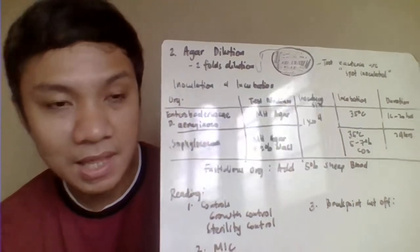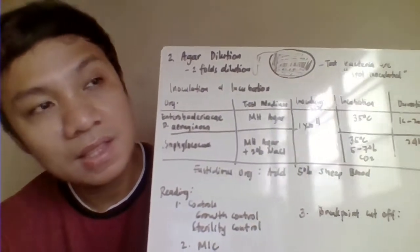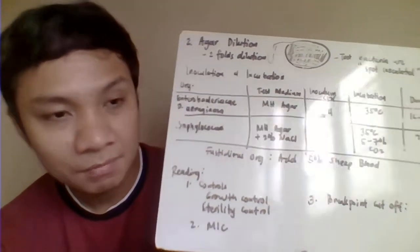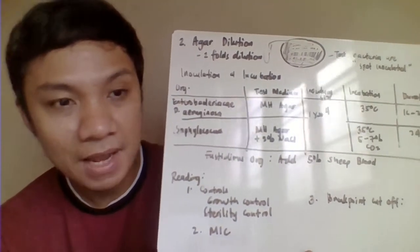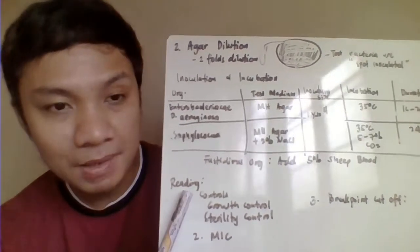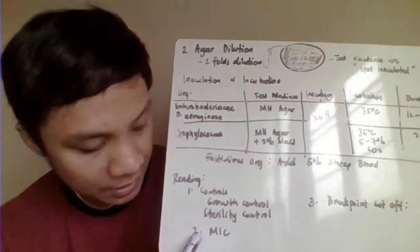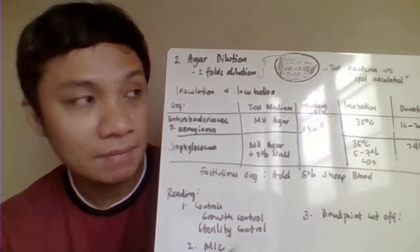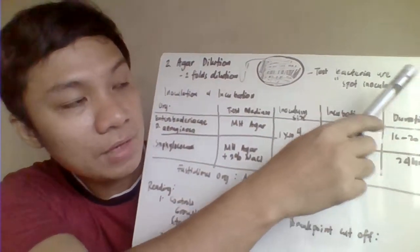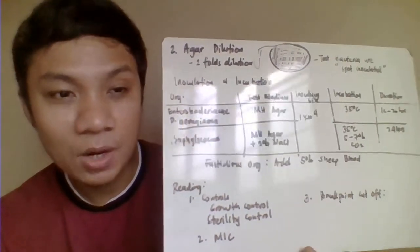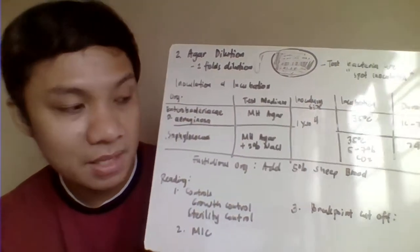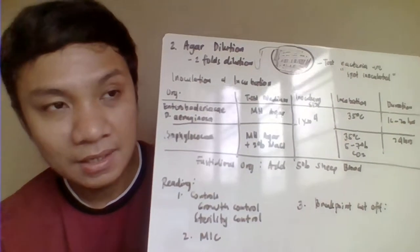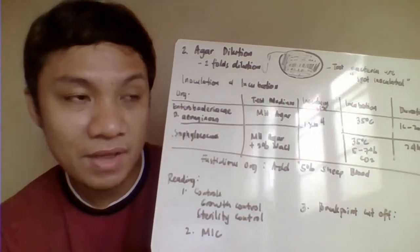Incubate fastidious organisms at 35 degrees Celsius with 5 to 7% carbon dioxide, the same as for Staphylococcus. For interpretation, you still need a growth control and sterility control. Then identify the Minimum Inhibitory Concentration (MIC) — the lowest drug concentration at which no bacterial growth is observed on each plate. You can also perform breakpoint classification: susceptible, intermediate, or resistant.